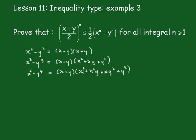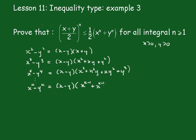The interesting thing about this is that when x and y are both positive — x greater than 0 and y greater than 0 — this factor will always be positive. We can extend this to the general case: x to the k minus y to the k equals x minus y times x to the k minus 1 plus x to the k minus 2 times y, all the way down to x times y to the k minus 2, plus y to the k minus 1.